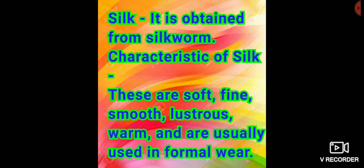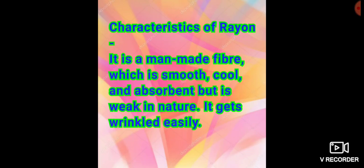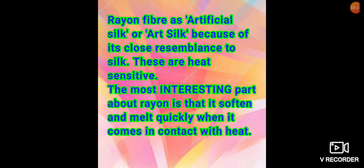It's time to begin with the second last topic of today's video that is characteristic of rayon. It is a man-made fiber which is smooth, cool and absorbent but is weak in nature. It gets wrinkled easily. People call the rayon fiber as artificial silk or art silk because of its close resemblance to silk. These are heat sensitive. The most interesting part about rayon is that it softens and melts quickly when it comes in contact with heat.